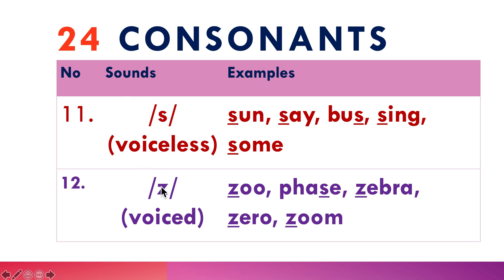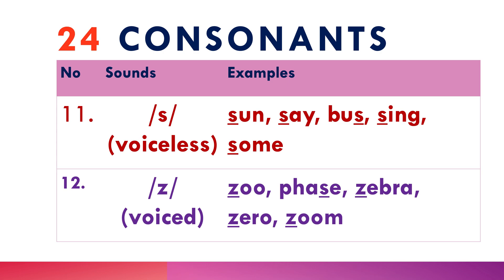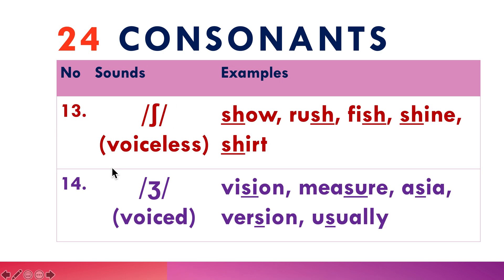Number eleven: /s/ is voiceless — as in son, say, bus, sing, some. Number twelve: /z/ is voiced — as in zoo, face, zebra, zero, zoom. See the difference between the voiceless /s/ and the voiced /z/.